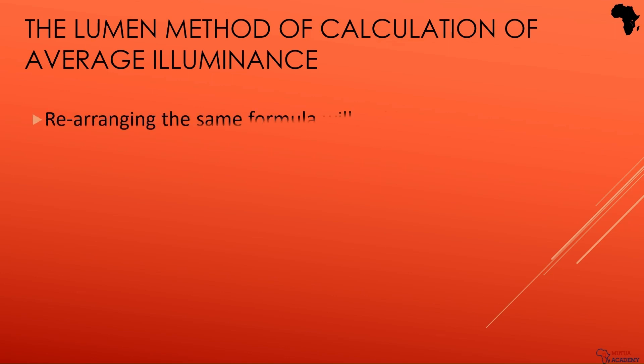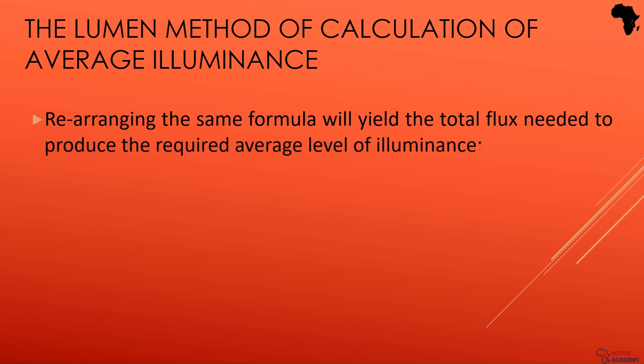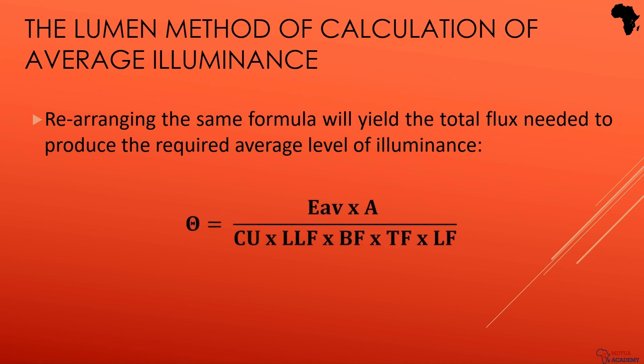Rearrange the formula to solve for the total luminous flux required to achieve that level of illuminance. This will give you the total amount of light you need to make your space shine bright like a diamond.